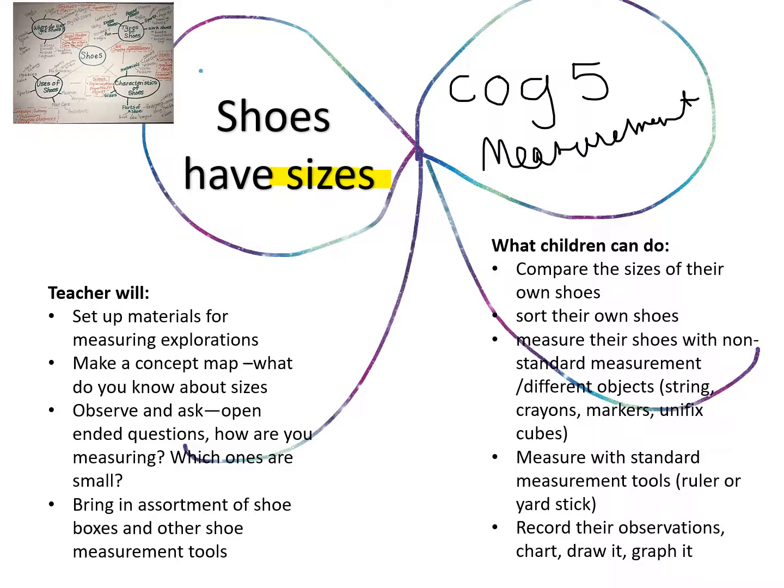What could children do? They can compare the sizes of their own shoes, sort their shoes, measure their shoes with non-standard measurement tools, measure with standardized tools, and also record their observations — chart, draw, and graph it. One of the things you might notice is that we are having the children actively explore and then also do things that allow them to represent their understandings. Keep in mind, all of these things would not be accomplished in one activity — we would select a focus for what the children are going to do.